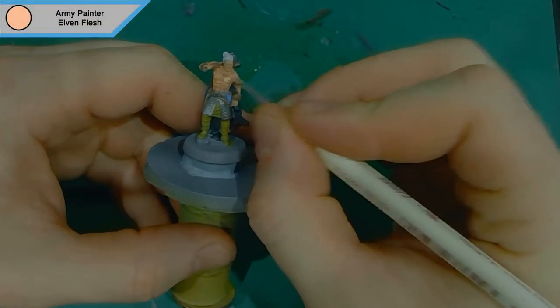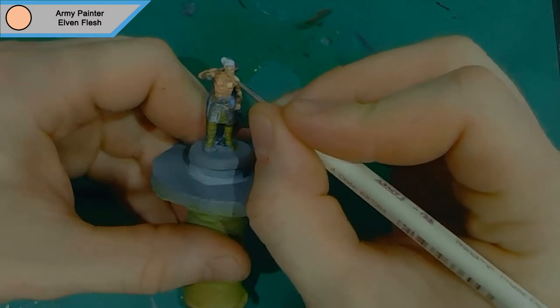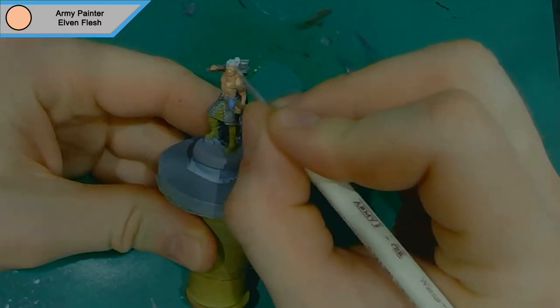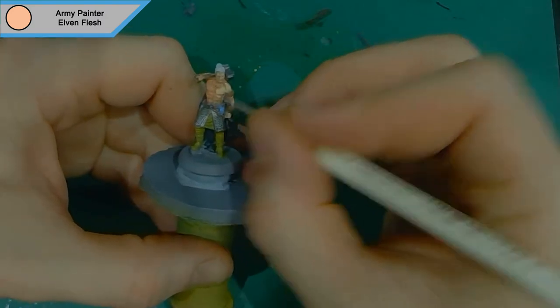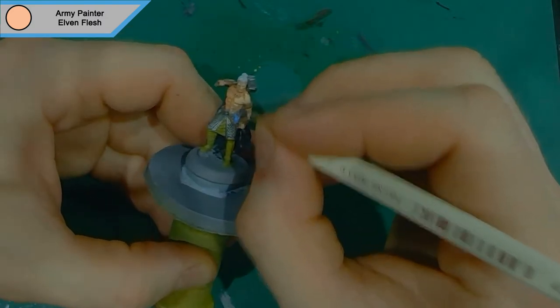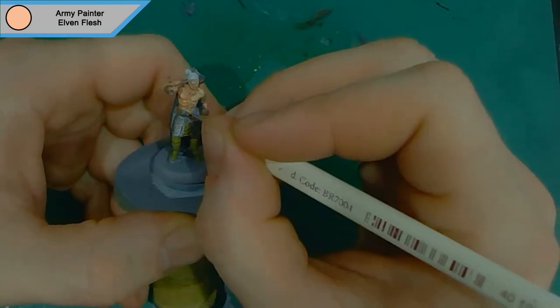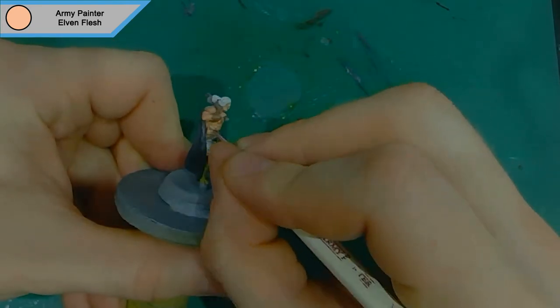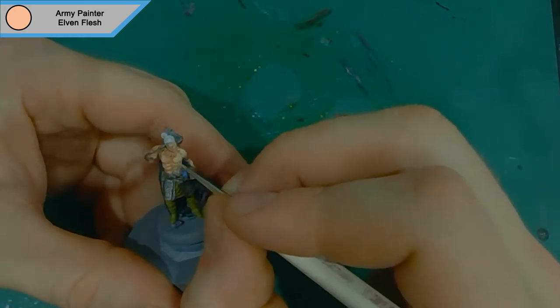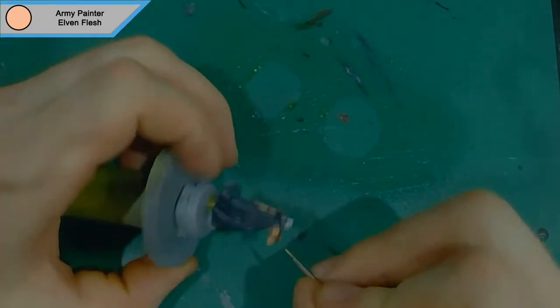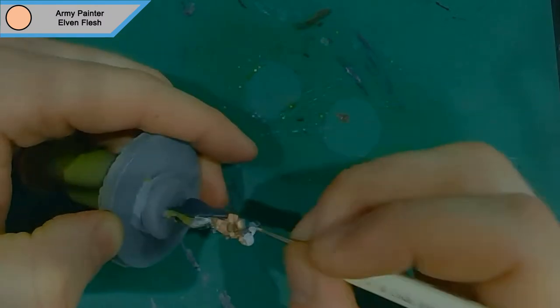Now we move on to the first batch of highlights, which is elven flesh, and that's just for all the skin parts. Any raised area on the skin is getting elven flesh on it. I find lately I've been doing the highlights before the washes, which I used to do the other way around, and they both seem to work. It's whichever one takes your fancy, but I think I prefer it like this because of the way it blends when you do the wash.